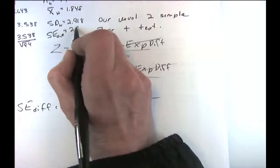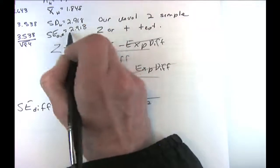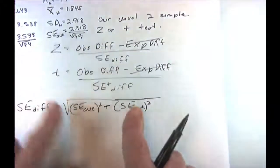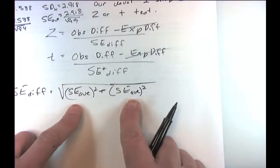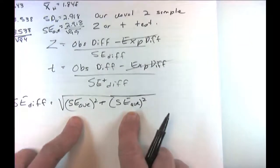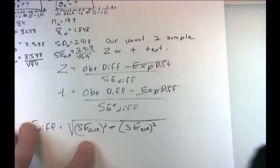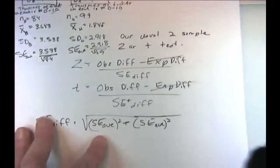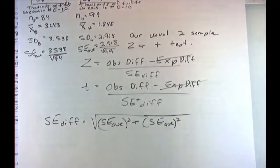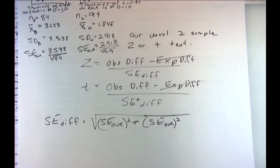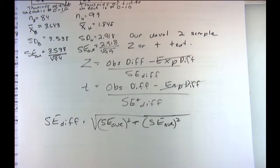Going to the computer, we compute the p-value for T equals 3.804 with 853 degrees of freedom, two-tailed. We get 0.01525%. We don't stop there though — this is the really important part.